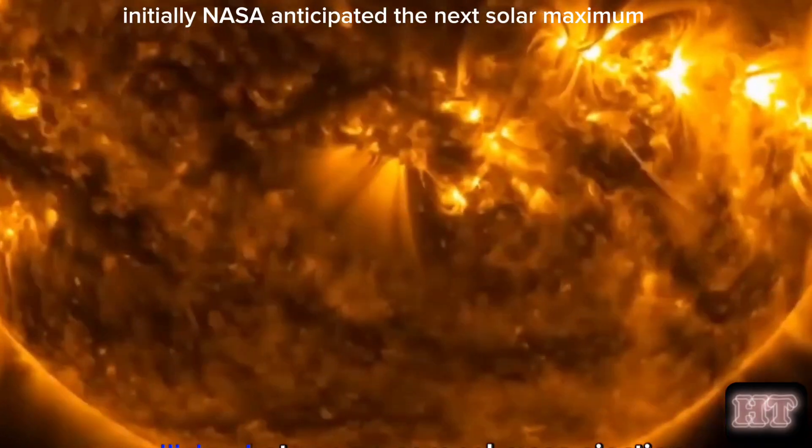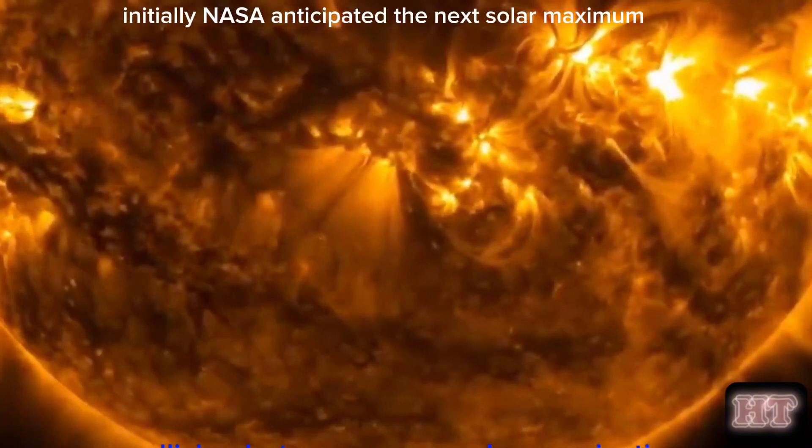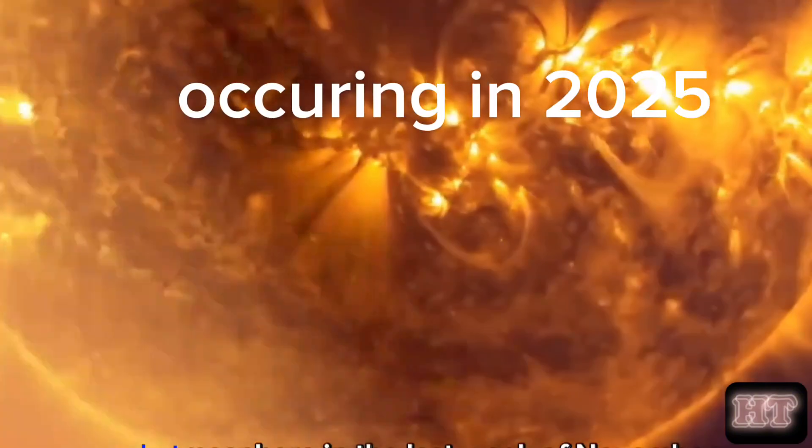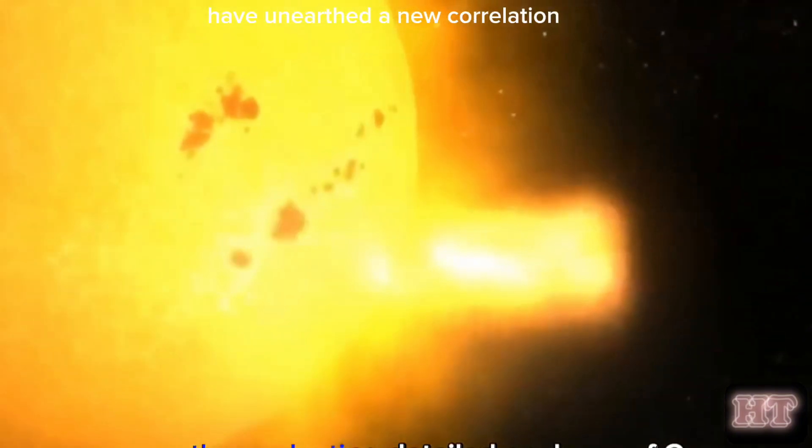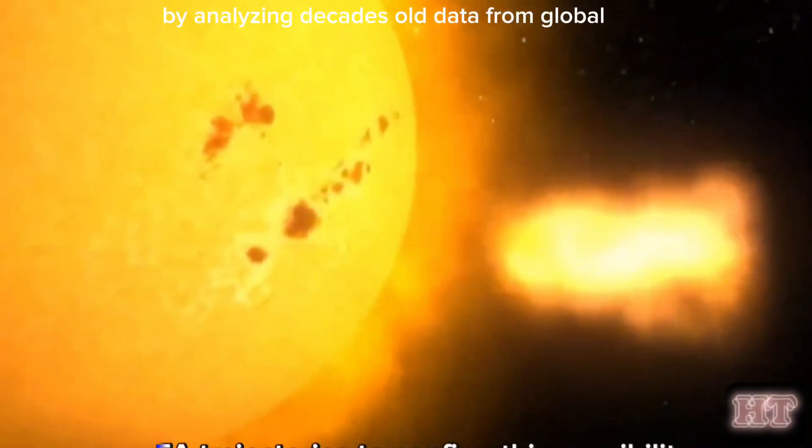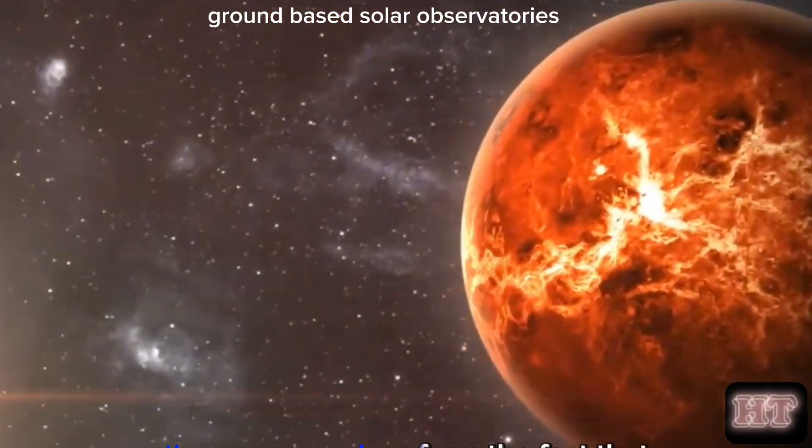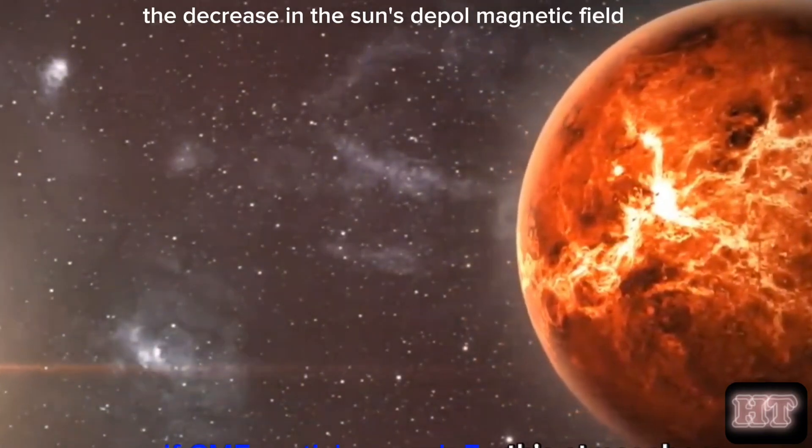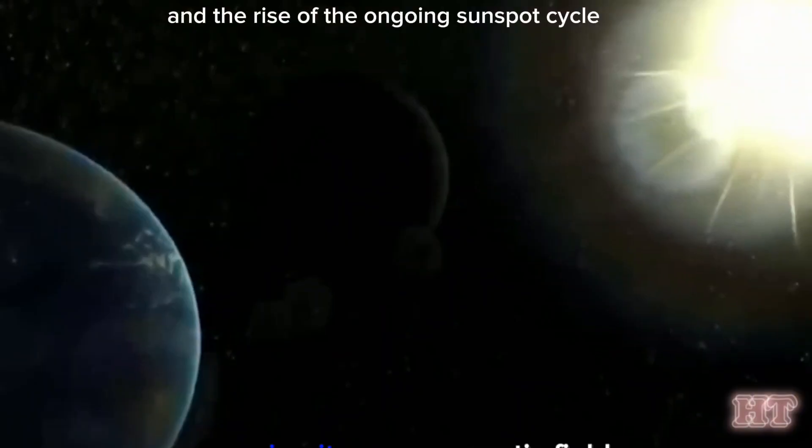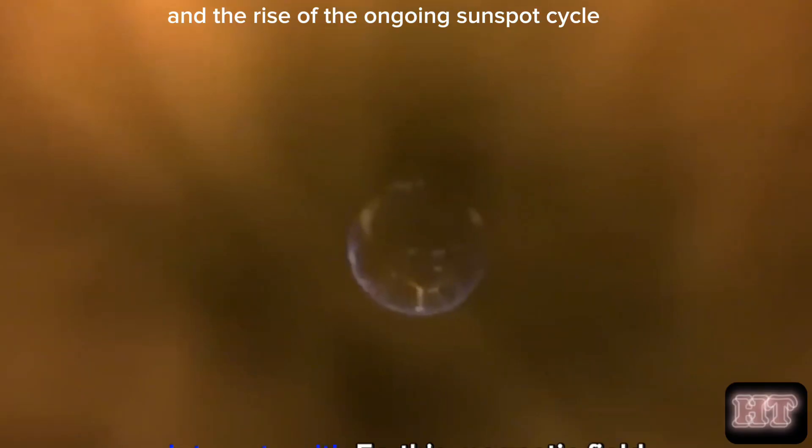Initially, NASA anticipated the next solar maximum occurring in 2025, but Indian astronomers, led by Dr. Nandi, have unearthed a new correlation. By analyzing decades-old data from global ground-based solar observatories, they found a link between the decrease in the sun's dipole magnetic field and the rise of the ongoing sunspot cycle.